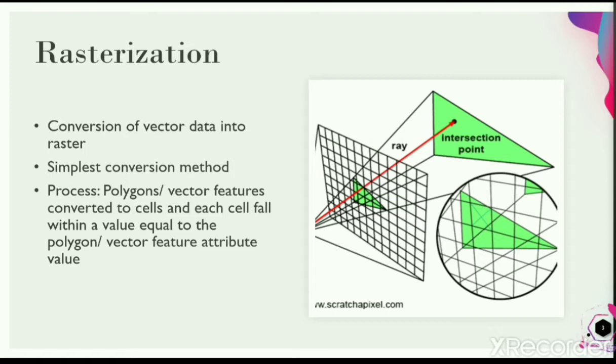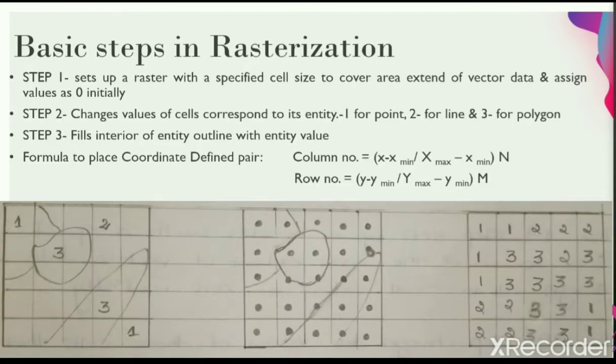The process of rasterization involves three basic steps. The first step sets up a raster with a specified cell size to cover the aerial extent of the vector data and assigns all cell values as zero in the initial stage. You can find the below images for that process.